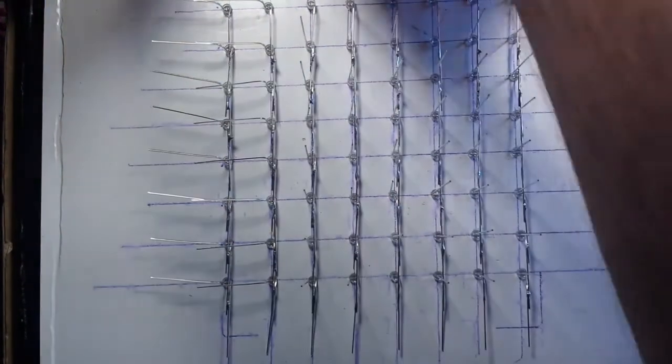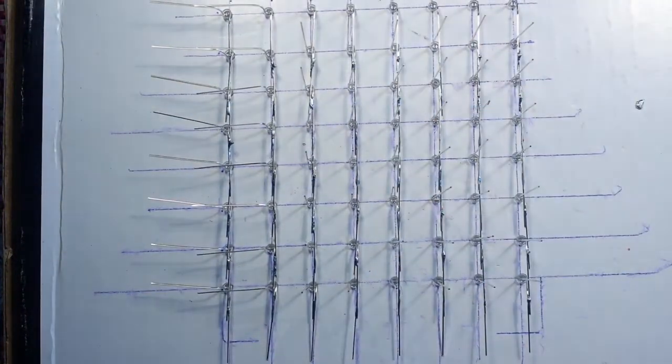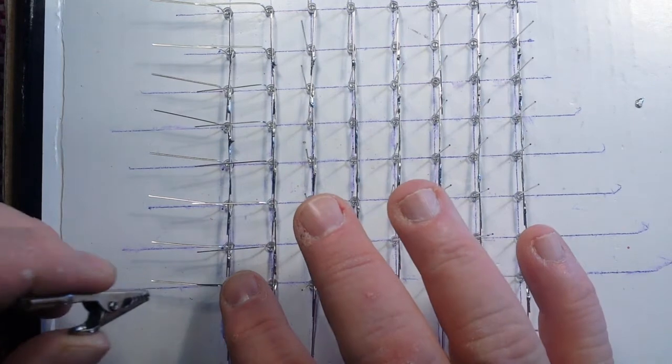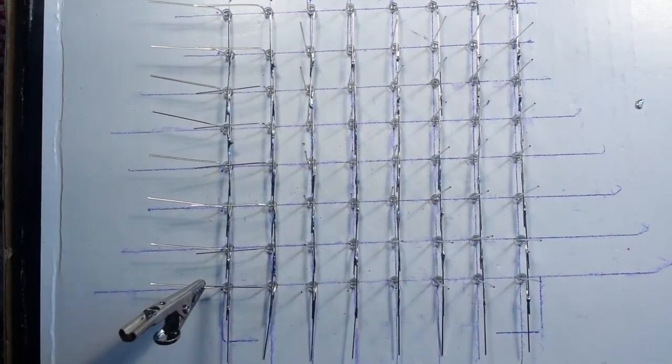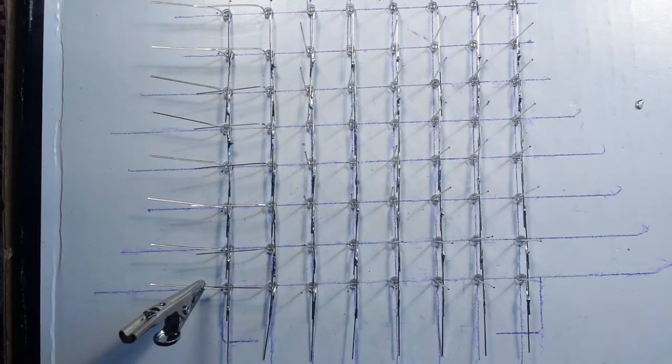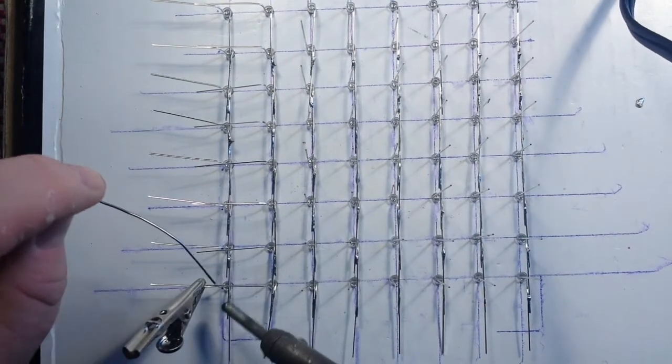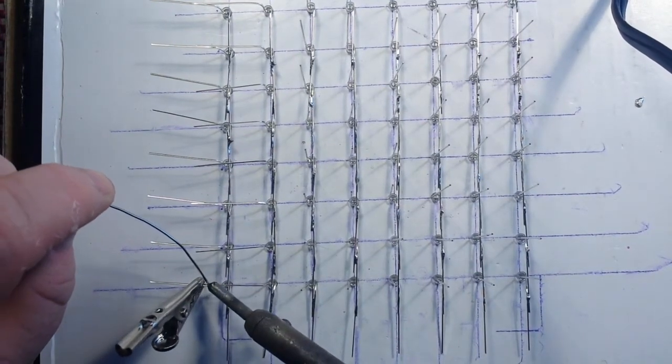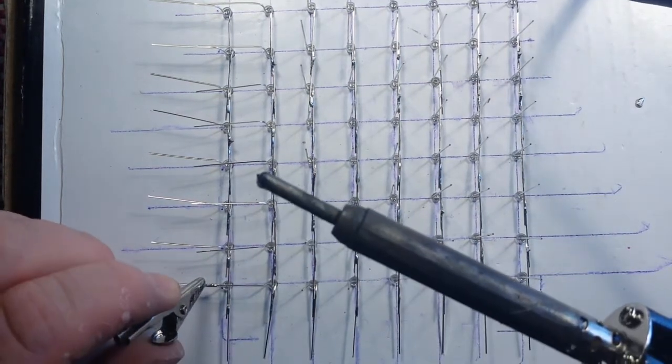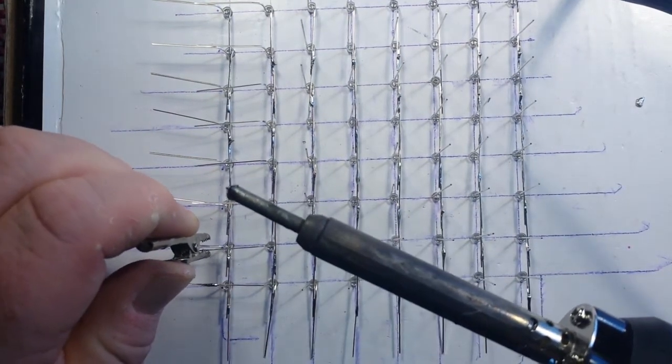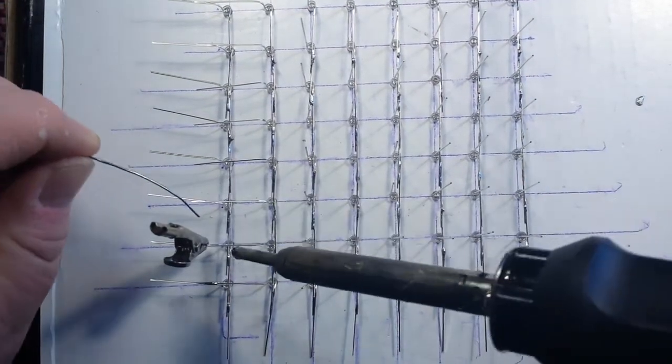Now the other trick that I have found is to take an alligator clip and clip those together. Then bring your soldering iron in from one side, your solder in from the other, and hit them.